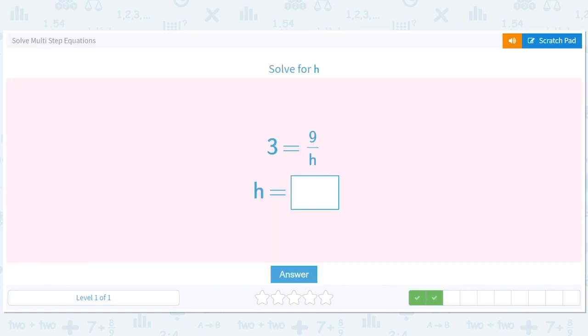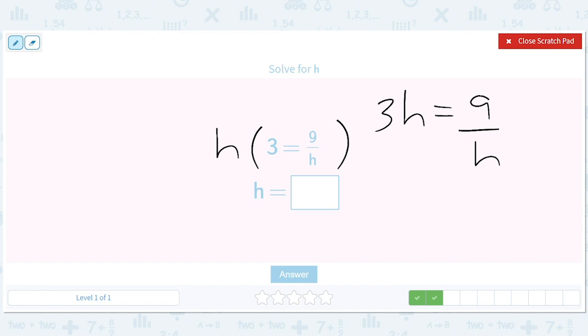How about this? This is a little bit different. We will multiply both sides by h. And we'll get 3h. And then we'll get equals 9 divided by h times h. But what happens? These h's cancel out. So we get 3h equals 9. And then we divide both sides by 3. And we get h equals 3.